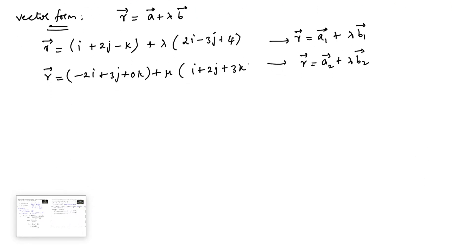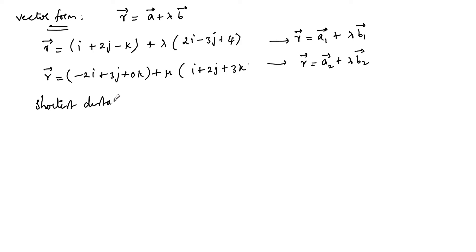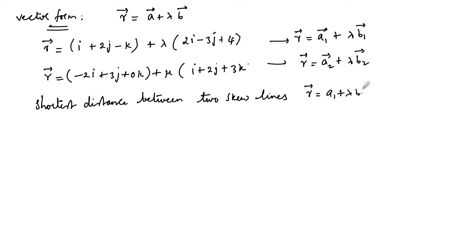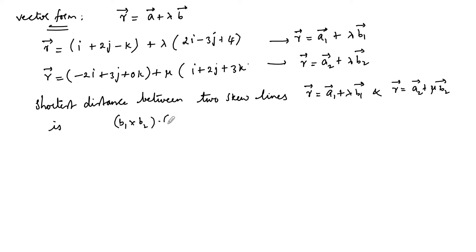The shortest distance between two skew lines r = a₁ + λb₁ and r = a₂ + μb₂ is given by the formula: |(b₁ × b₂) · (a₂ − a₁)| / |b₁ × b₂|. Let us now compute b₁ × b₂.